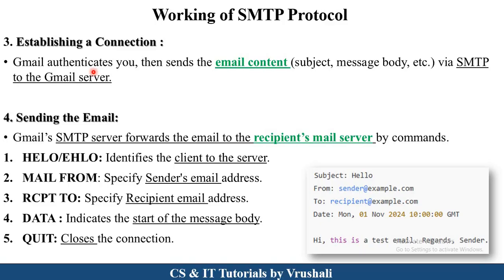After Gmail authentication, the sender sends all the email contents — the subject of the email and the complete message — to the Gmail server, then to the SMTP server. The next step is sending emails: the SMTP server forwards this mail to the recipient mail server. The recipient mail server uses commands to identify a particular mail, checking subject, sender mail ID (from), receiver mail ID (to), date, time, and the actual message. Different commands are used: MAIL FROM specifies the sender's mail address, RCPT TO specifies the recipient's mail address, DATA marks the start of the message body, and QUIT closes the connection.